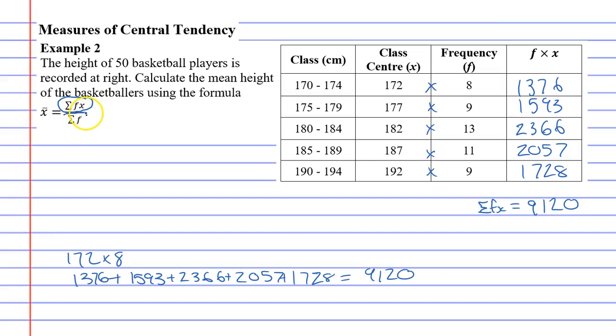If we look at the bottom of the fraction, it's saying sigma f, which basically means... Actually, let's write that here. Sigma f means add up all the frequencies. So if I add all these numbers up, you'll get 50 because there are 50 basketball players all together.